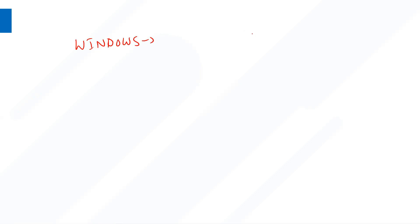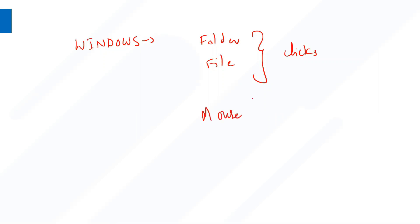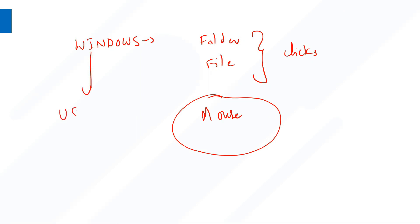Those who are well-versed with Windows operating system — whenever we want to work on either a folder or a file, what do we do? We use clicks. We use mouse. We are so addicted to mouse that whatever we do, we will be doing with the help of the mouse: to create a folder, to create a file, to work on multiple things in Windows. So that is the reason Windows is an operating system which is really user friendly.